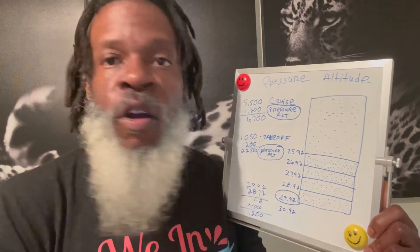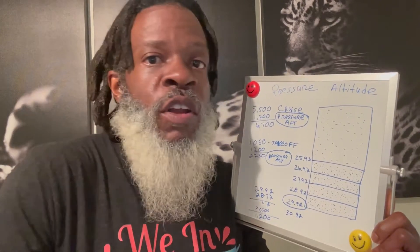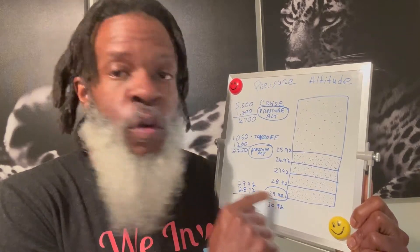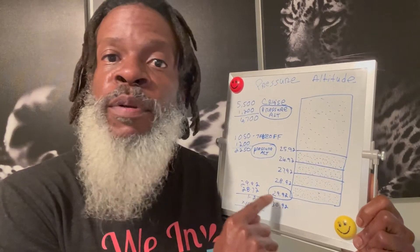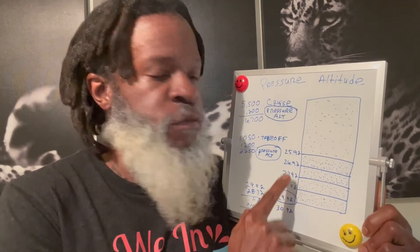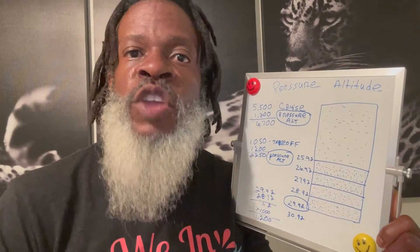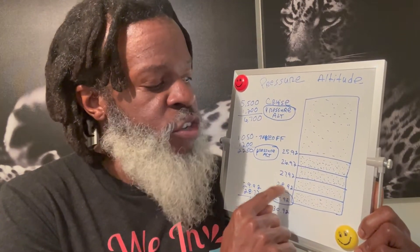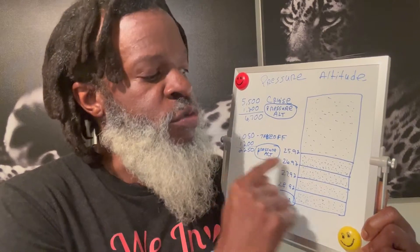We need to talk about what standard pressure is at sea level — 29.92. That number is going to be drilled into your head. At sea level, standard pressure is 29.92. Then everything else is calibrated based on that. For every 1,000 feet you go up from 29.92, you're going to lose one inch of mercury. So it goes from 29.92 to 28.92 to 27.92, and so on.